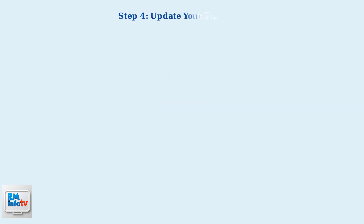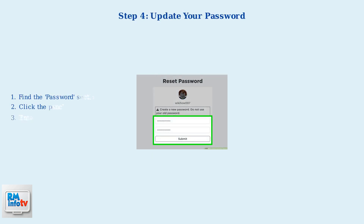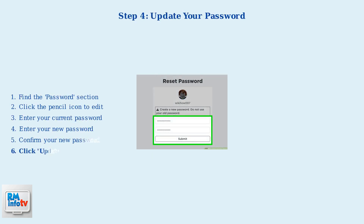Step 4: In the Account Info section, look for the Password area. Click the pencil icon next to it to edit your password. You'll need to enter your current password first, then type your new password twice to confirm it. Finally, click the Update button to save your new password.